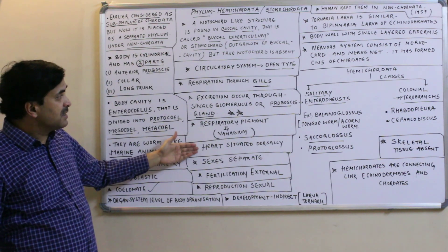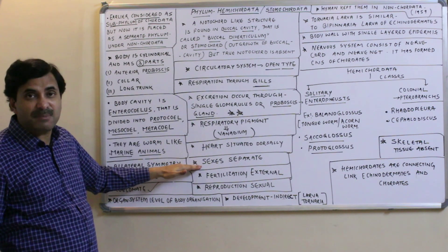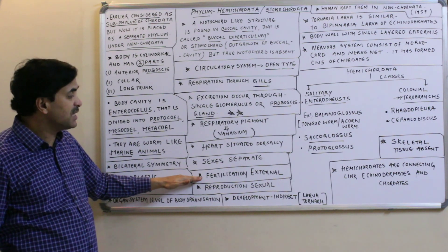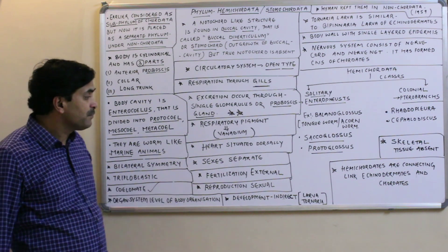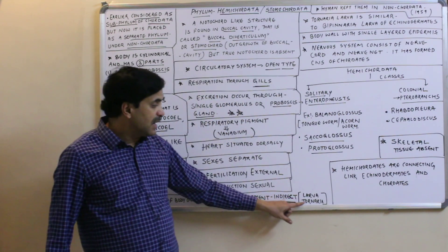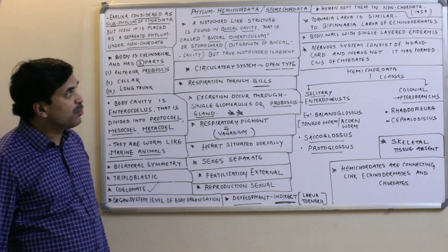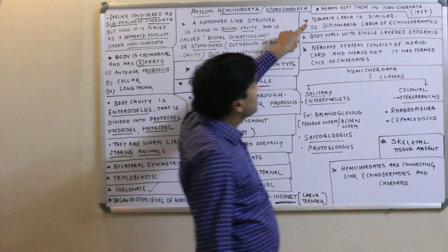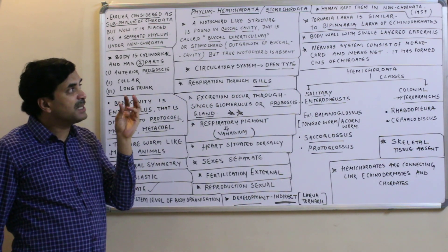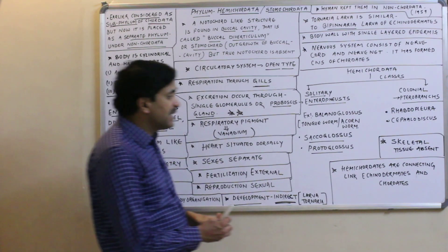The heart is situated dorsally. The sexes are separate — they are unisexual with sexual dimorphism. Fertilization is external and reproduction is sexual. Development is indirect, and the larva is called the tornaria larva.